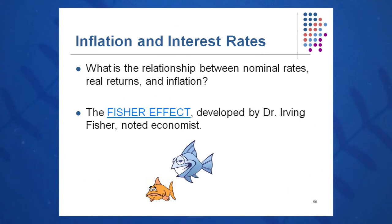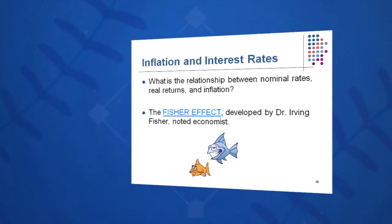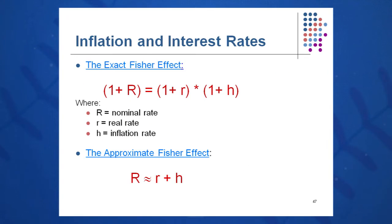Real rates are interest rates adjusted for inflation, and nominal rates are total rates. I like to call big R the total rate of return, comprised of a real component little r and an inflation component little h. Real rates are a percentage change in what you can buy with your dollars, and nominal rates are a percentage change in the number of dollars you have. Dr. Fisher said: one plus big R equals one plus little r times one plus little h.